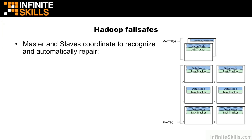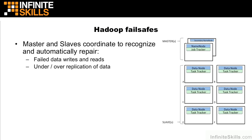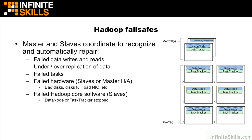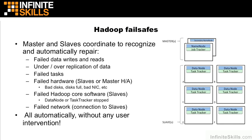Hadoop has several fail-safes baked into it. The master and slave daemons are able to coordinate, recognize, and automatically repair: failed data writes and reads, under or over replication of data, failed tasks, failed hardware such as bad disks and bad NICs, failed Hadoop software on the slaves such as a data node or task tracker being stopped, and failed network connections to the slaves. Hadoop can automatically repair all of these situations without any manual user intervention.